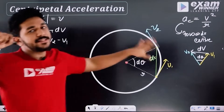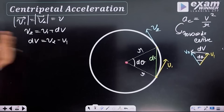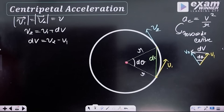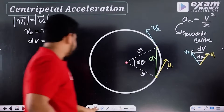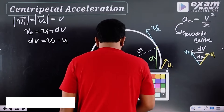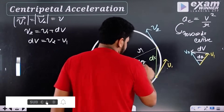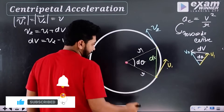Change in velocity: velocity 2 minus velocity 1. Now, dv equals v2 minus v1. You will see this triangle. This is the E triangle — the R-R-ds triangle. You will see that if R and R are equal sides, this forms an isosceles triangle with ds.